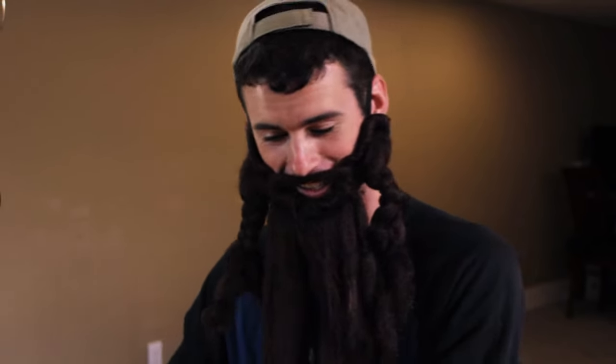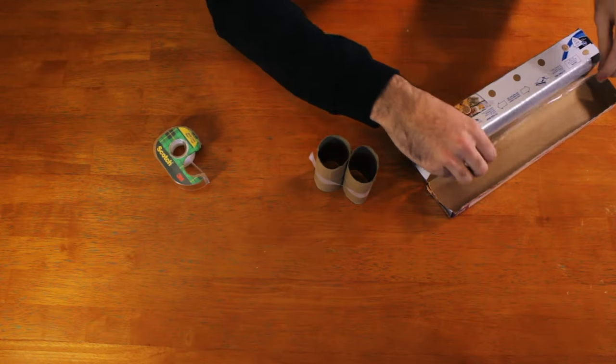Once they are conjoined, we are ready to make the lens. Select a very small range of plastic wrap, roughly the size of one half dollar or two quarters.